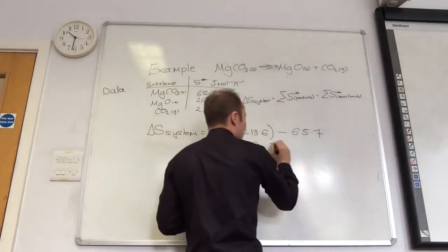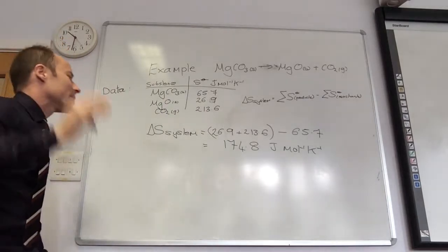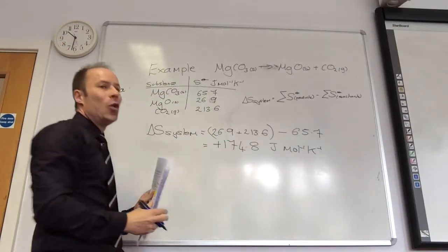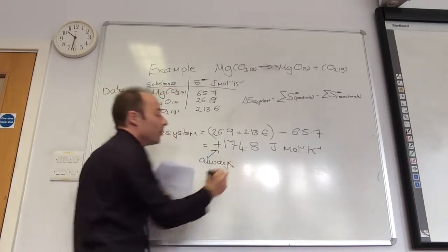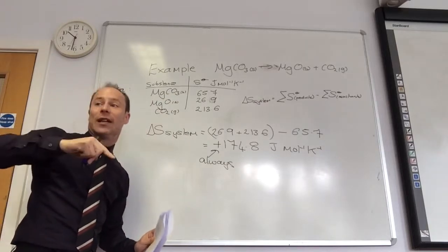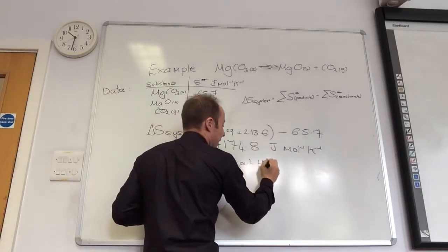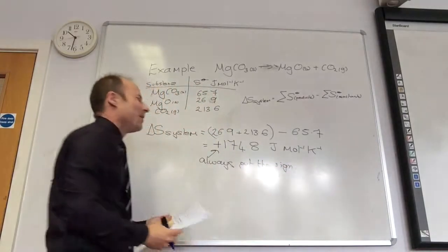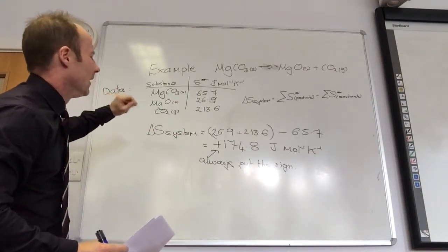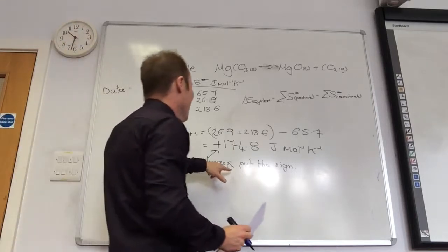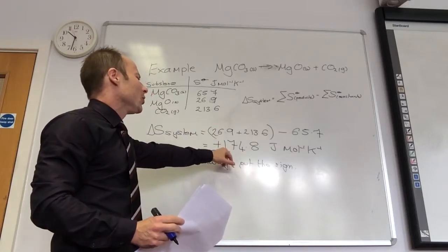Key things: units are joules per mole per kelvin. Also for entropy, always put the sign — positive or negative. Entropy is sometimes negative, but whatever it is, always include the sign. Edexcel and OCR are particular about this. So our answer is +174.8 joules per mole per kelvin.